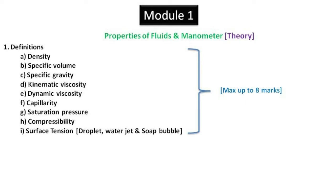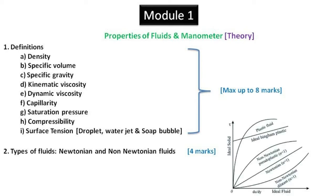In surface tension concept, there are three small derivations on droplet, water jet, and soap bubble. Each of these derivations can be asked for two to three marks. Types of fluid question is asked only once. In this question, one or two fluids shown in the graph would be asked to explain. It is very simple to answer.